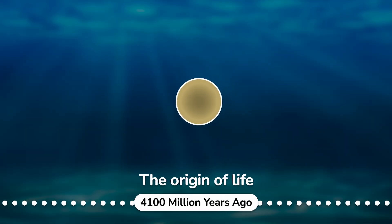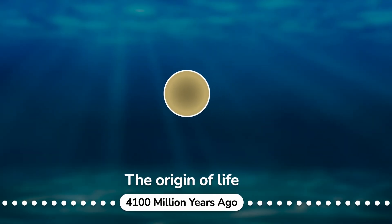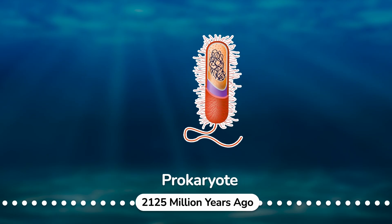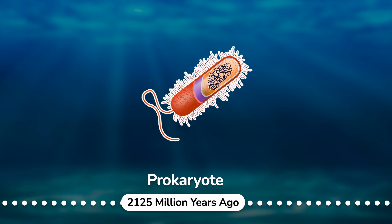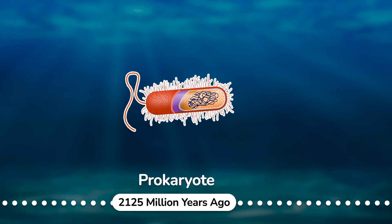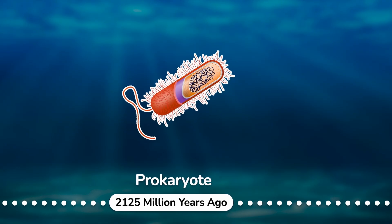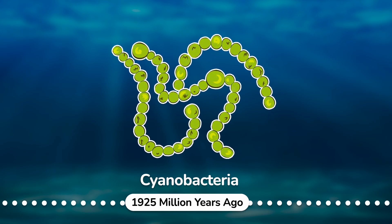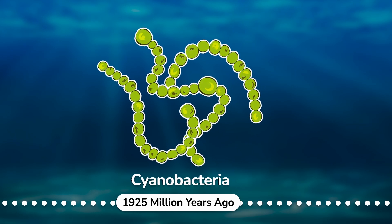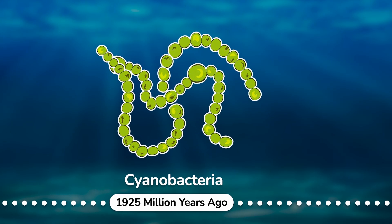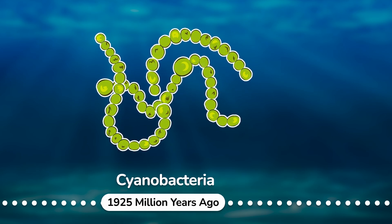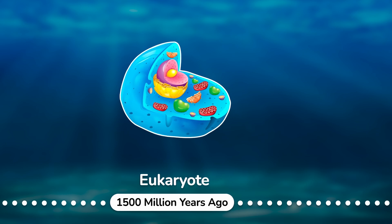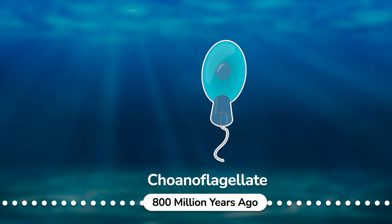The origin of life: the natural process by which life has arisen from non-living matter. Prokaryote: a single-celled organism that lacks a nucleus and other membrane-bound organelles. Besides the absence of a nucleus, prokaryotes also lack mitochondria. Cyanobacteria: a phylum of gram-negative bacteria that obtain energy via photosynthesis; they appear to have originated in a freshwater or terrestrial environment. Eukaryote: a diverse domain of organisms whose cells have a nucleus.